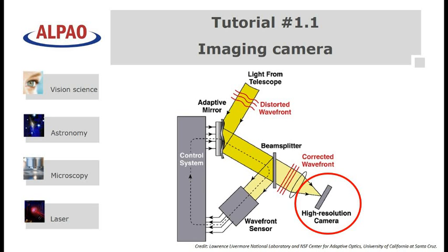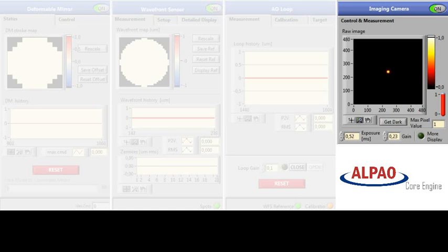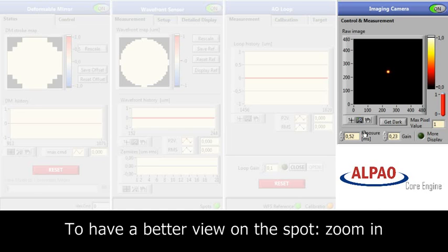The first part is the high resolution imaging camera. This can be seen in the tab to the far right.